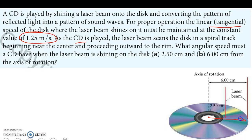What angular speed must the CD have when the laser beam is shining on the disc at 2.50 cm from the axis of rotation and at 6.00 cm from the axis of rotation? The problem is going to be the same for each, just different distances. I'm going to solve A, and then I'm just going to give you an answer for B. It would be nice if you could solve it yourself.